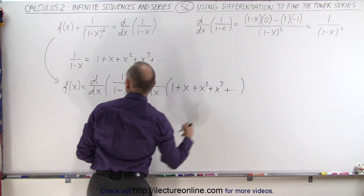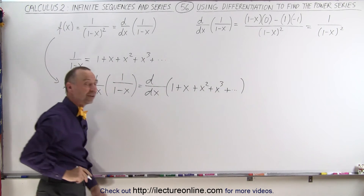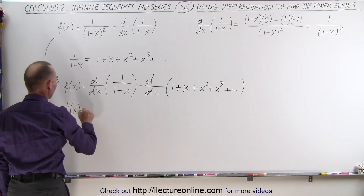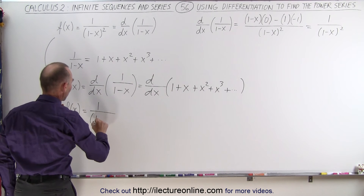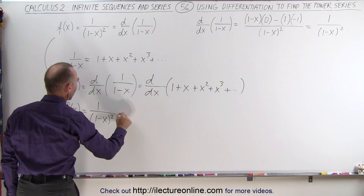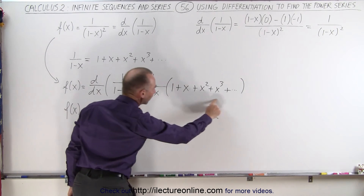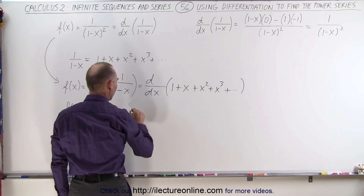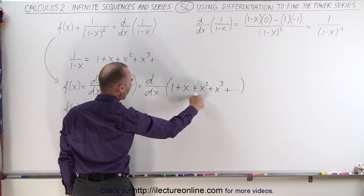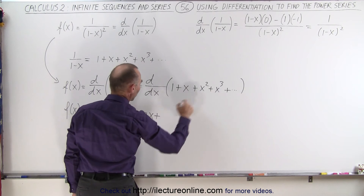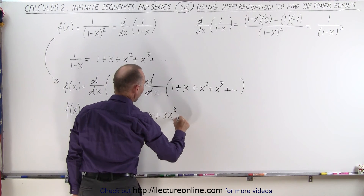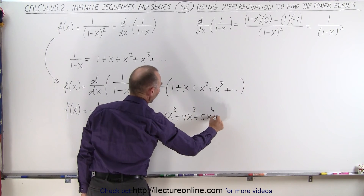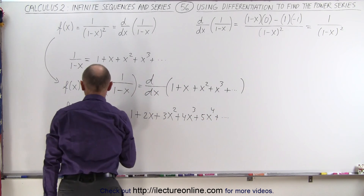That power series will then be the function written as a power series, which means f of x, which is equal to 1 over the quantity 1 minus x squared, is going to equal the derivative: the derivative of 1 is 0, the derivative of x is 1, so this becomes 1 plus 2x plus 3x squared plus 4x cubed plus 5x to the 4th power plus so forth.